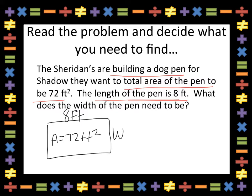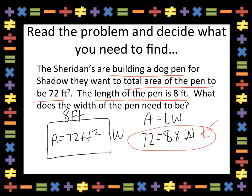Using my formula for area — area equals length times width — I know 8 times something has to equal my area of 72 feet. This is the equation I will use to solve my problem: 8 times what is 72? I know that 8 times 9 is 72, so the width is 9 feet. It's important to label our units. Width is just a measurement of length, so it's not square units — it's just units, in this case feet.